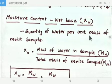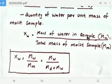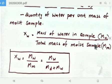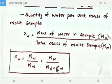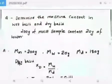Moisture content on a wet basis is the quantity of water per unit mass of the moist sample — that is, the total mass of the sample is taken as the denominator. So Xw equals Mw divided by Mm. Since Mm equals Md plus Mw, we get Xw equals Mw divided by (Md plus Mw).